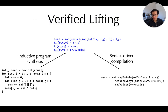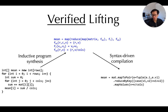We call this combined approach verified lifting. It is lifting in the sense that we are converting input source code up to a higher-level representation — the reverse of typical compilation. And it is verified because anything produced by our compiler is guaranteed to be sound, as we run all found postconditions through a theorem prover to make sure they are valid and semantically preserving.